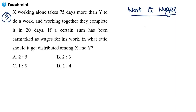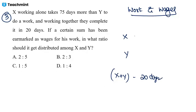Payment is according to the work done, or according to your efficiency. If you are more efficient, you will do more work. Together they complete the work in 20 days, and X is taking 75 days more than Y. Let's say Y is taking 'a' days, then X will take 'a + 75' days.